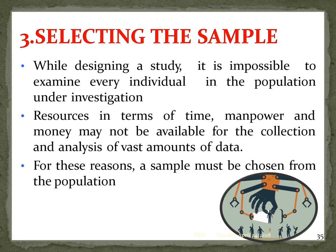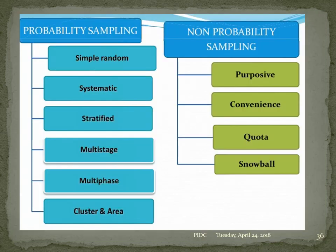Selecting the sample is a very important procedure that some researchers do not follow correctly. It is impossible to examine every individual in the population under investigation — resources of time, manpower, and money may not be available. For this reason, a sample must be chosen. Sampling techniques include probability sampling (simple, systematic, stratified, multi-stage, multi-phase, cluster) and non-probability sampling (purposive, convenience, quota, snowball).